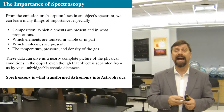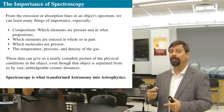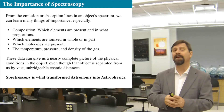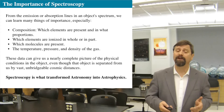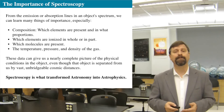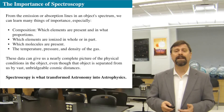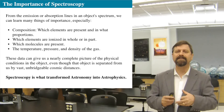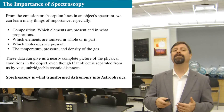Thus the lines get broadened — that's called pressure broadening. The same thing happens with density, so a high-density atmosphere can produce different kinds of broadening. Each of these things can be studied inside the spectrum of the star.